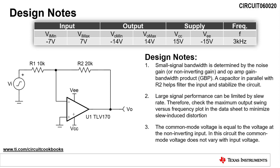Next, the large signal performance can be limited by slew rate. Therefore, check the maximum output swing versus frequency plot in the datasheet to minimize slew-induced distortion.